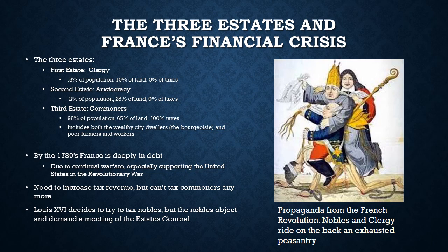They needed to increase taxes, but they really couldn't increase taxes on the commoners anymore because they were already taxing them very heavily. So Louis XVI decided he was going to try to tax the nobles, but the nobles objected and demanded a meeting of the Estates General — basically a representative body that hadn't met for more than a hundred years. Louis XVI gave in and agreed to allow the Estates General to meet and discuss ways to raise the money needed to pay France's debts.